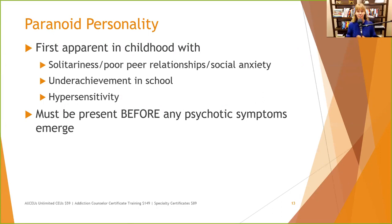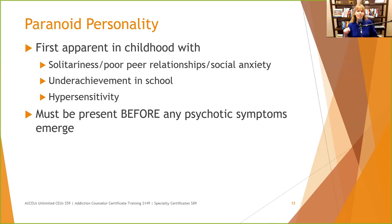Let's look at some of the personality disorders and think about differential diagnosis. Paranoid personality disorder first appears in childhood with solitariness, poor peer relationships, social anxiety, underachievement in school, and hypersensitivity. This overlaps with other personality disorders, autism spectrum, and fetal alcohol spectrum, especially in early years. Paranoid personality must be present before any psychotic symptoms emerge — if the person has schizophrenia or another psychotic disorder, they must have met criteria for paranoid personality before those symptoms emerged.